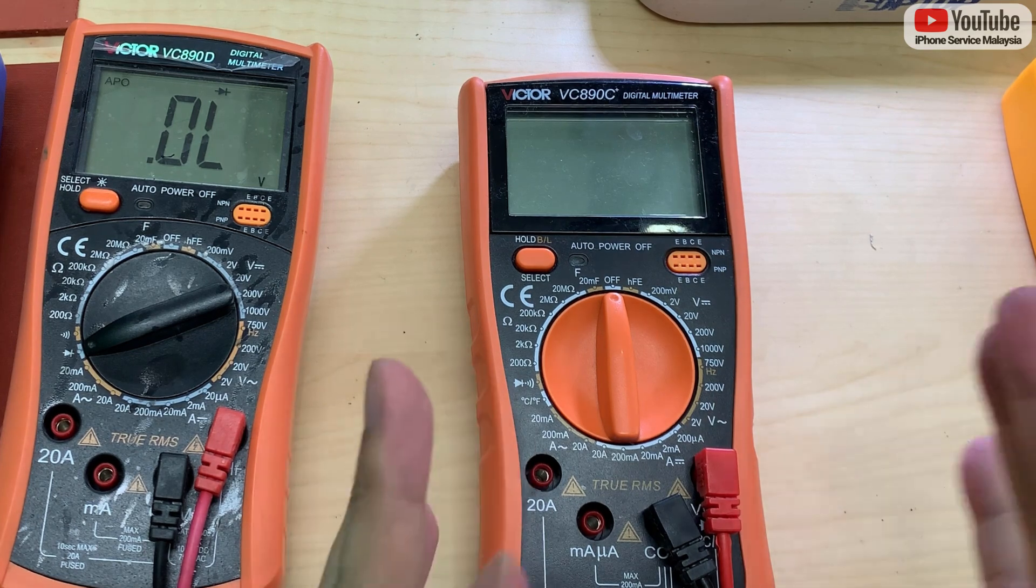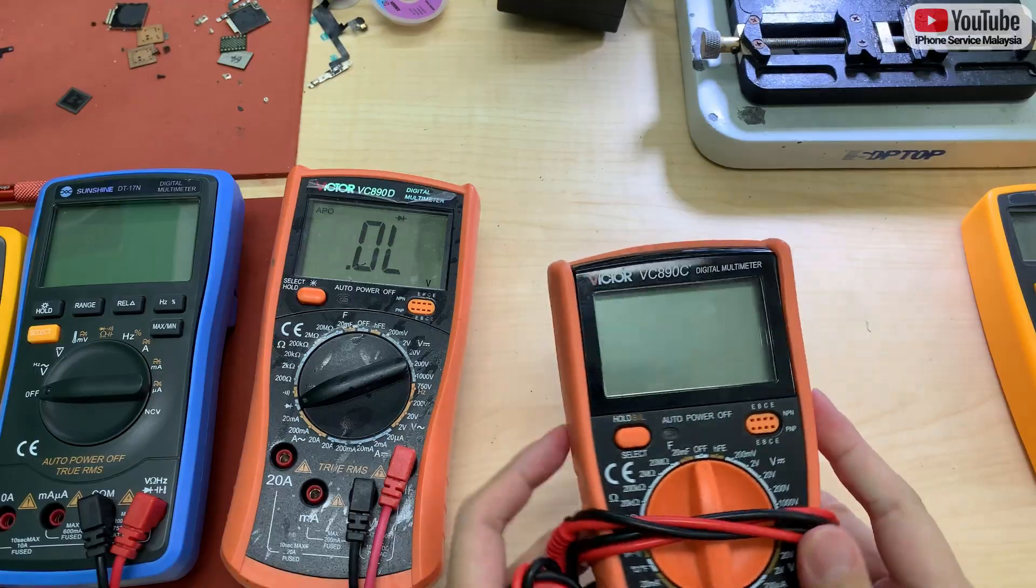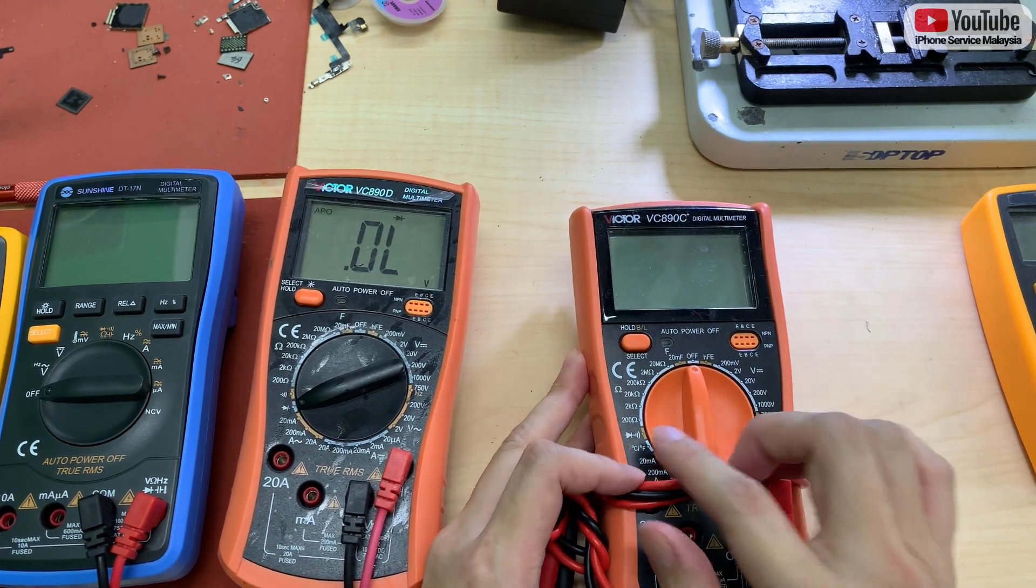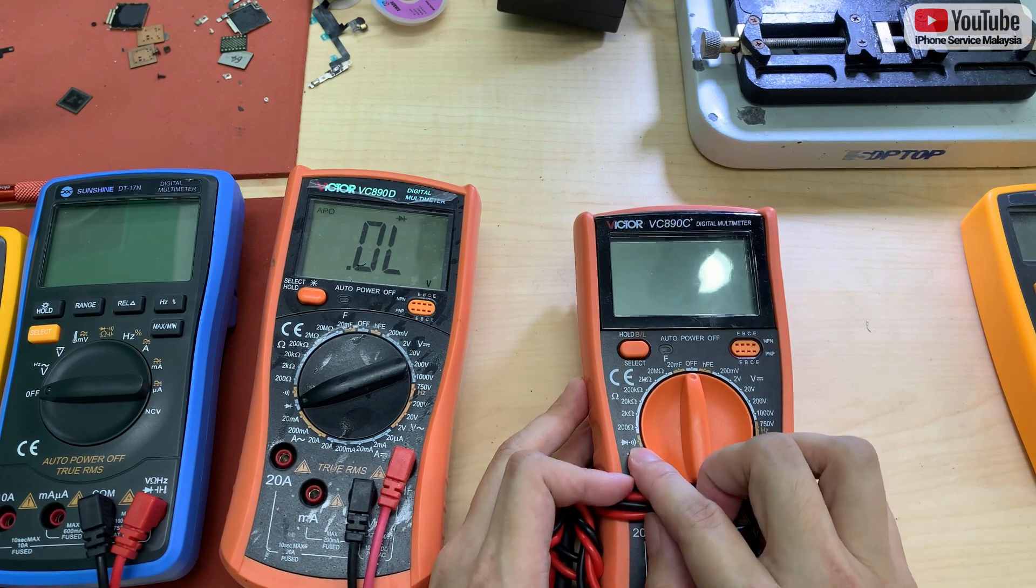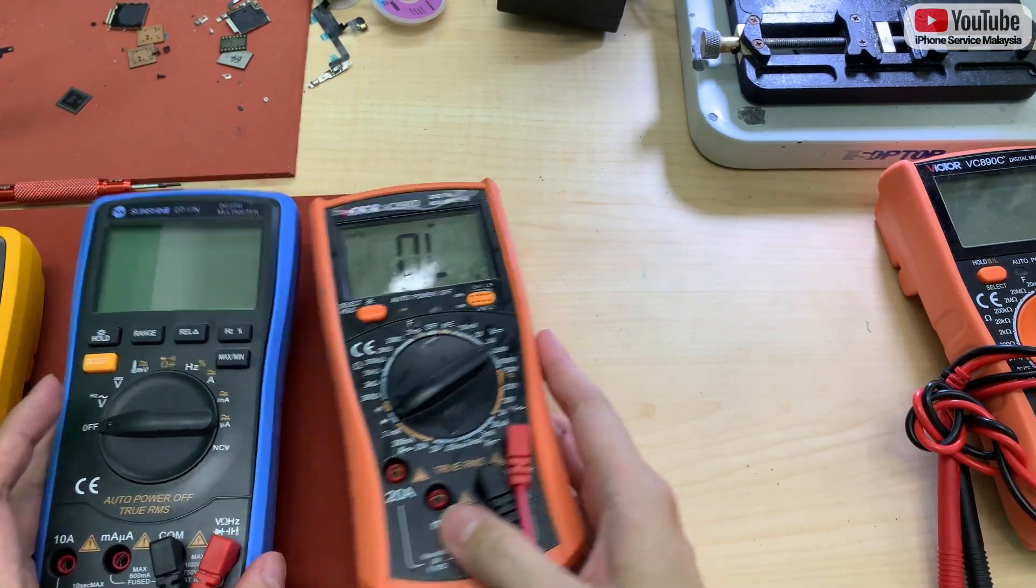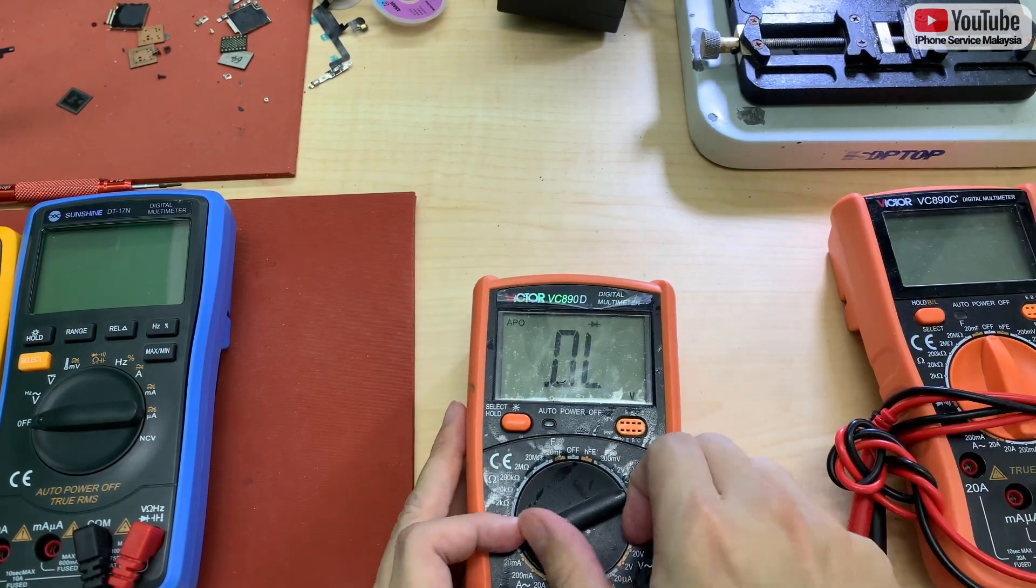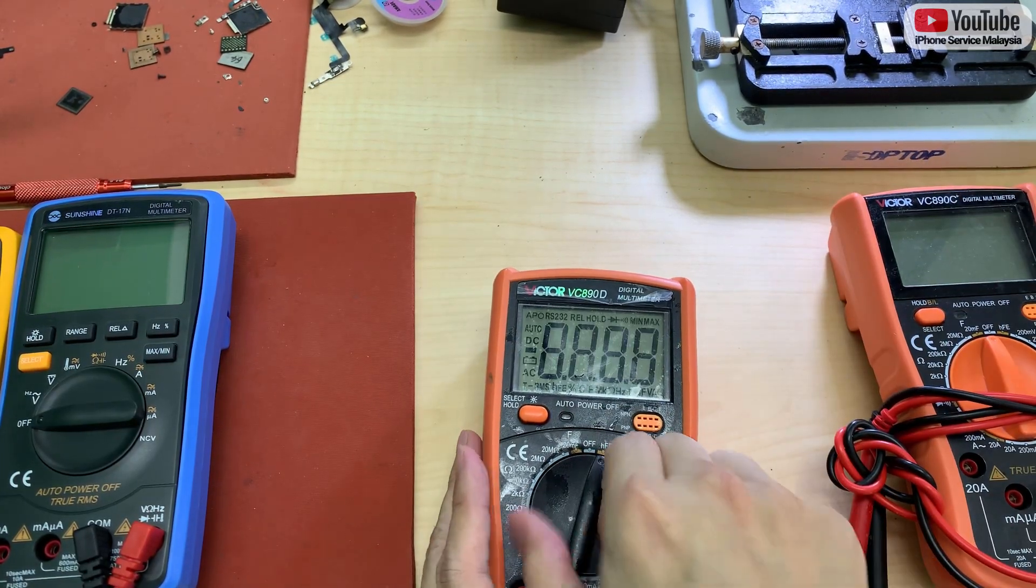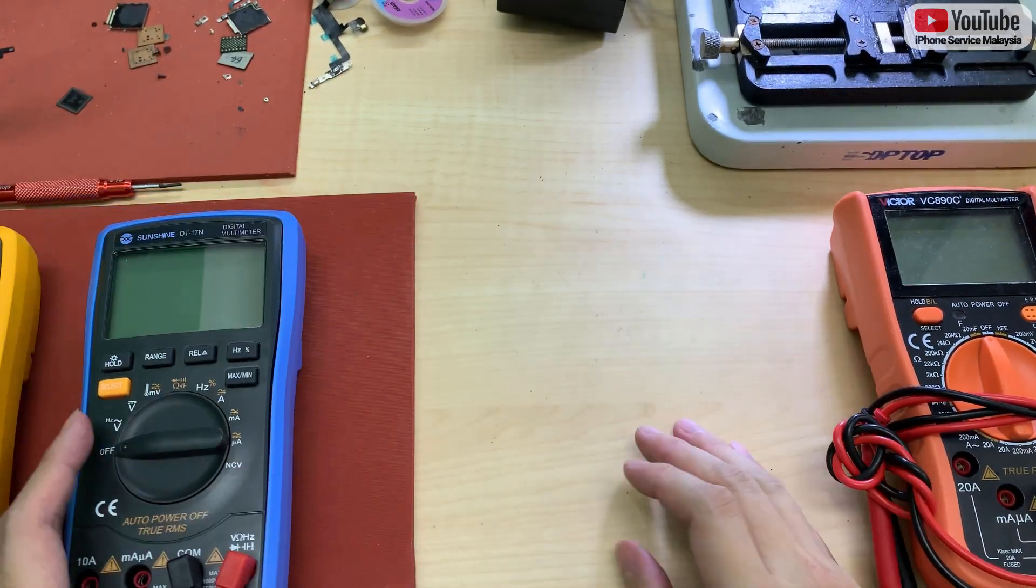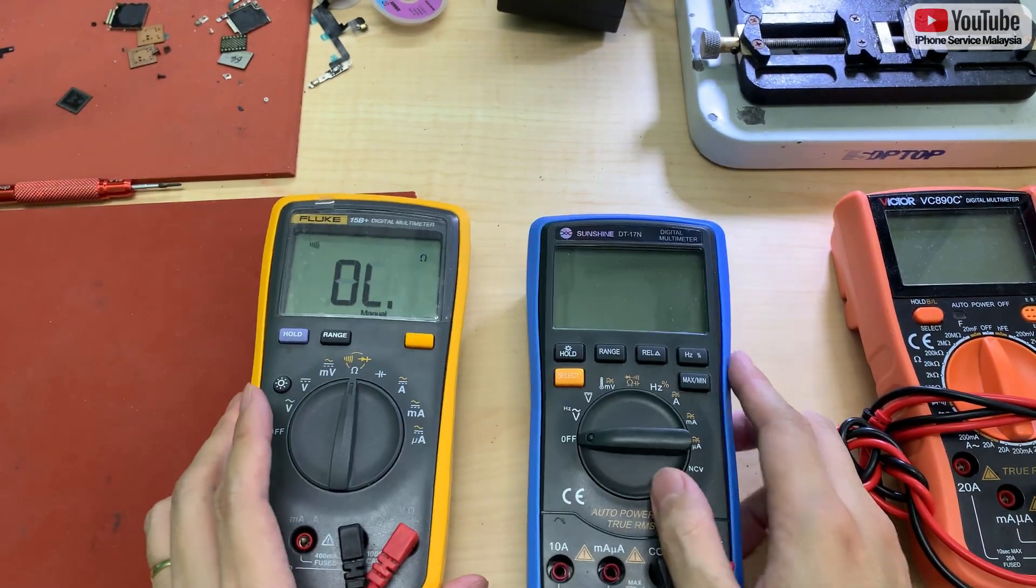But you will know how to use it after you learn my course. So avoid this kind of multimeter. Before you buy, make sure you ask them whether that mode can be switched or not. And what kind of multimeter I suggest. So since the Victor already decided to make it that way, so we better look for the others. Sunshine is not bad, you know.